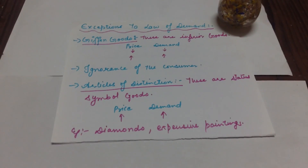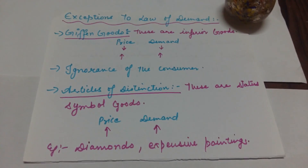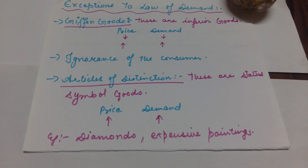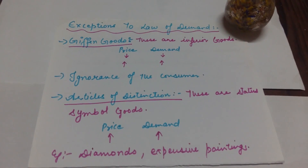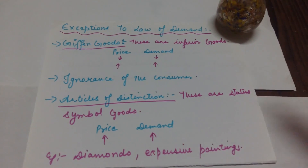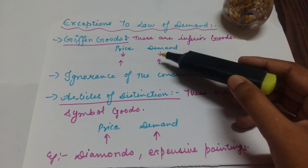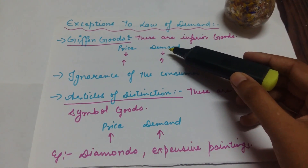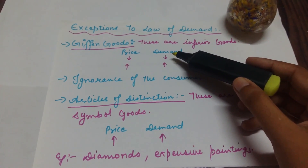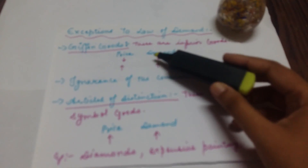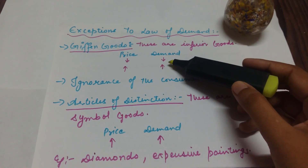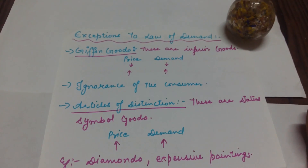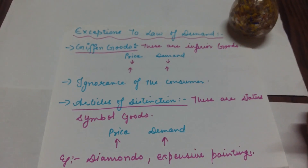There are some exceptions to the Law of Demand — it is not applicable to all goods. The first exception is Giffen goods, which are inferior goods. In this case, if your price is decreased, your demand is also decreased. Why? Because purchasing power is increased, and if your purchasing power is increased, you can buy more of the superior goods instead. In inferior goods, if the price decreases, demand also decreases; and if your price increases, purchasing power decreases and you buy more of the inferior goods but less of the superior goods.